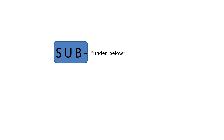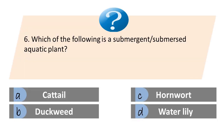The next prefix is sub, which means under or below. Which of the following is a submerged aquatic plant? A. Cattail. B. Duckweed. C. Hornwort. D. Water lily. The answer is C. Hornwort.